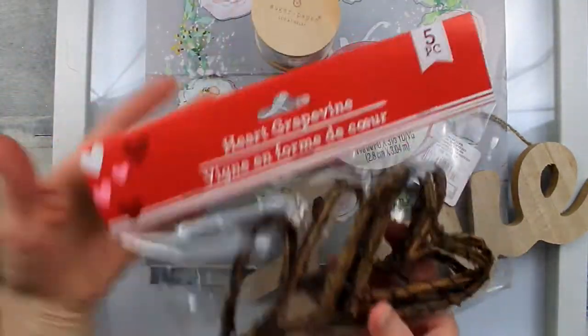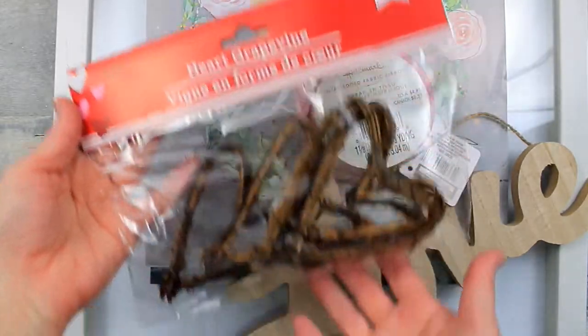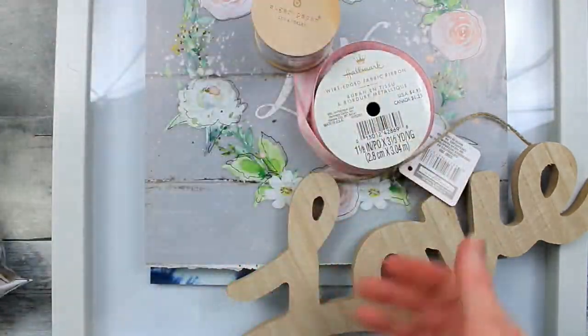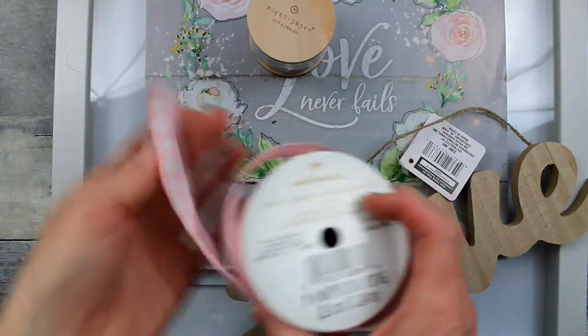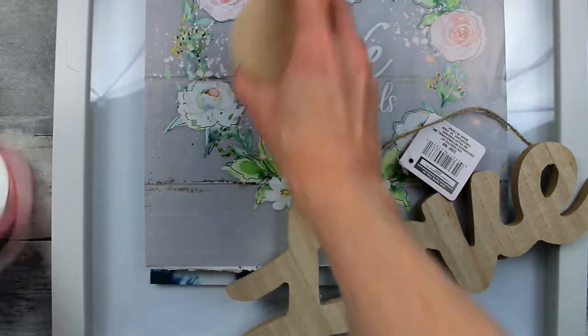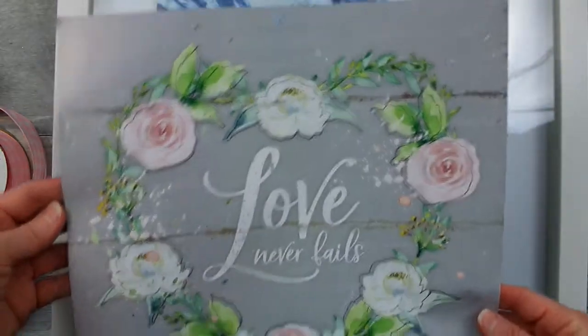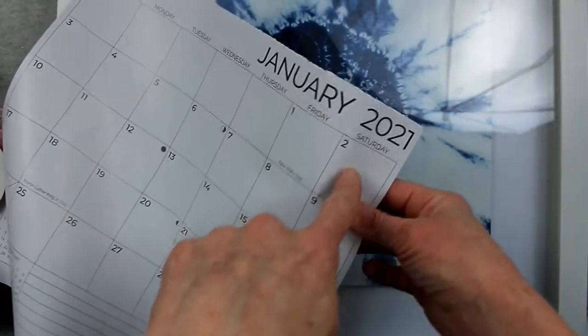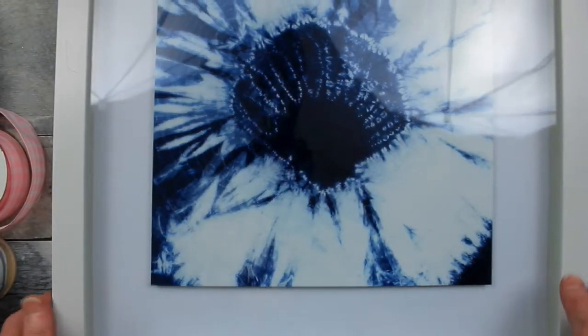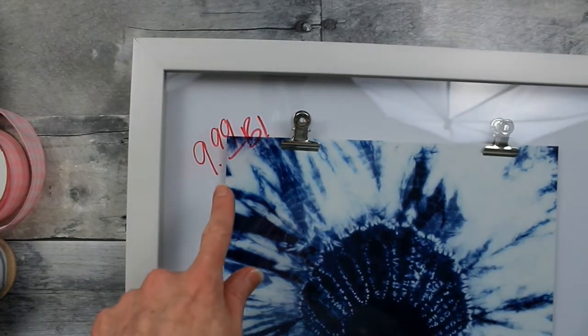We're going to use brown decorative shred, some heart grapevine decoration pieces, ribbon from Dollar Tree or the thrift store, whichever you prefer, whatever you have on hand, a calendar page from the Dollar Tree, and this is a frame that I got from Goodwill.